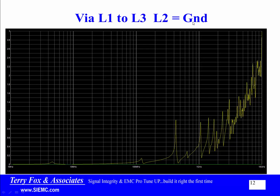Where does the return current flow? It flows on the ground plane, because that is the common power source for the driver. Ground is a common reference for all drivers, whether they're 5V, 3.3V, 2.5V, 1.8V, 1.5V, 1.2V, et cetera.